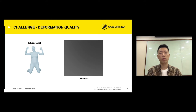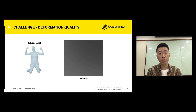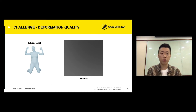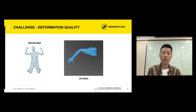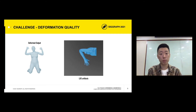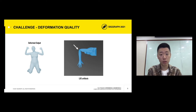Third, the existing deformation models like linear blend skinning, also known as LBS, suffer from artifacts in joint regions. These artifacts generally require a tailored and pose-specific refinement. This refinement for a single character could take several hours for a skilled animator.